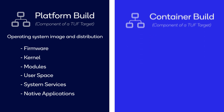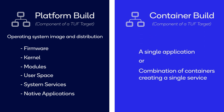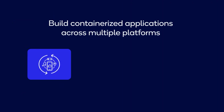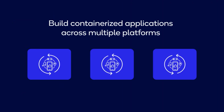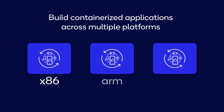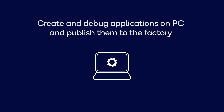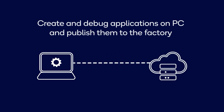The container build can be a single application or a combination of containers creating a single service. Also, using Foundries Factory, you can build your containerized applications across multiple architectures, such as x86, ARM, or ARM64. This offers developers the flexibility to create and debug applications on a host PC, and then publish them to the factory for deployment on real hardware.